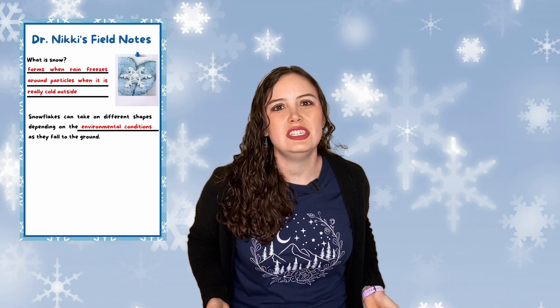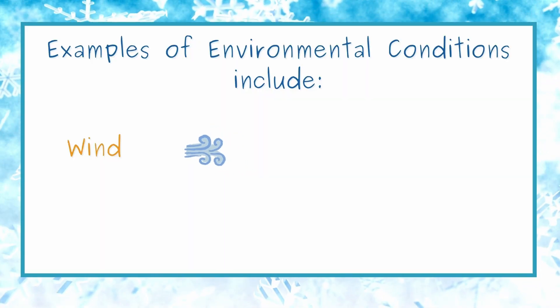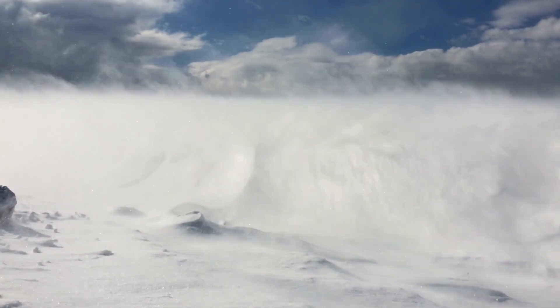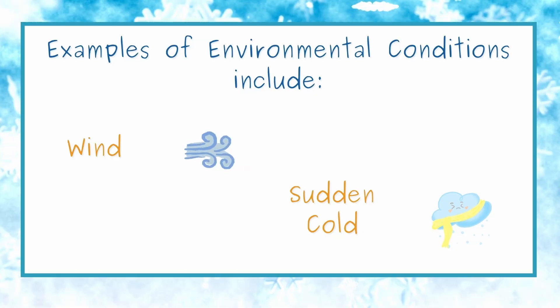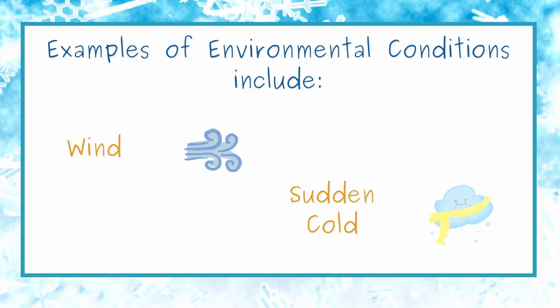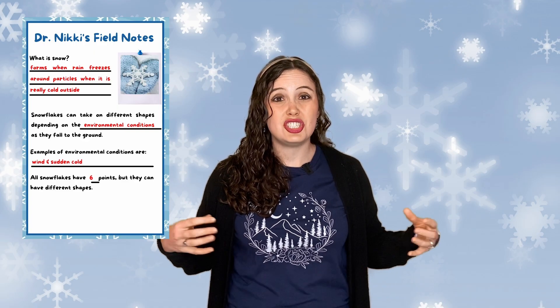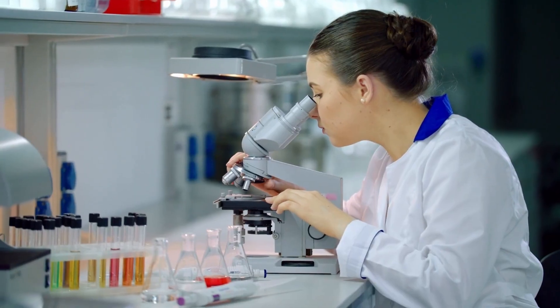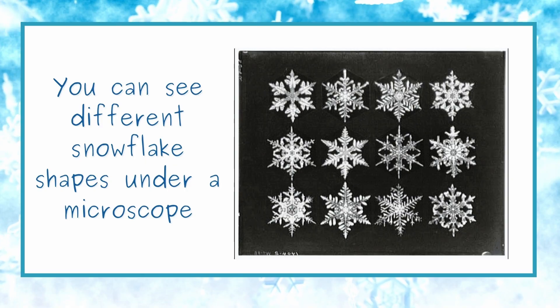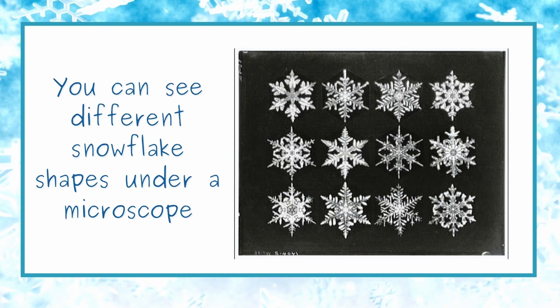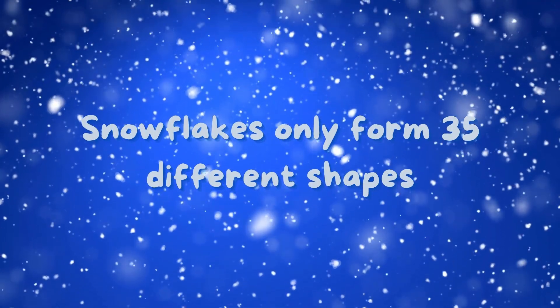By environmental conditions, we're talking about things like wind. A really strong wind could blow toward a snowflake and make it form a certain shape, or it could get really cold really quickly, and that could form another type of snowflake. All of them end up having about six points on them, but they can take different shapes. And if you were to pick up a snowflake and look at it under a microscope, you would see different shapes. We now know that snowflakes really only form about 35 different shapes — we used to think it was endless, and now we know it's about 35.